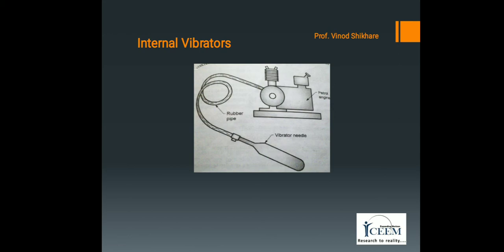It is very important to keep the vibrating head in the concrete while draining in order to keep the bearings cool and avoid breakdown. It should be inserted vertically or nearly so, at 45 cm to 75 cm apart, and should be withdrawn slowly at the rate of 7.5 cm per second. It should not be used for pushing concrete laterally, as it will cause segregation. The frequency of vibrations is about 7000 cycles per minute. Such vibrators are used for compacting large sections of mass concrete, beams, columns, and foundations.